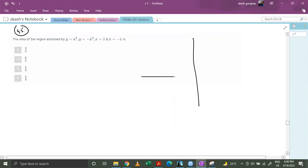So basically we have two parabolas over here. This is y equals x square. This is y equals minus x square. And this is x equals 1. This is x equals minus 1.